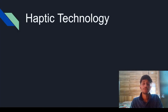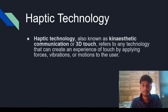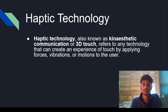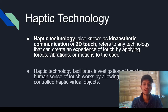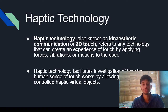Haptic technology is also known as kinesthetic communication or 3D touch. It refers to any technology that can create an experience of touch by applying forces, vibrations, or motions to the users. Haptic technology facilitates investigation of how the human sense of touch works by allowing the creation of controlled haptic virtual objects. You may have seen Iron Man movies in which Tony Stark uses haptic technology.